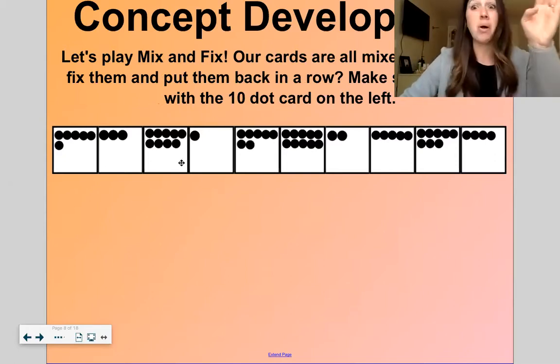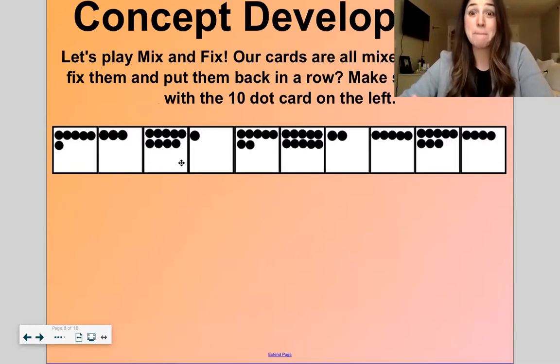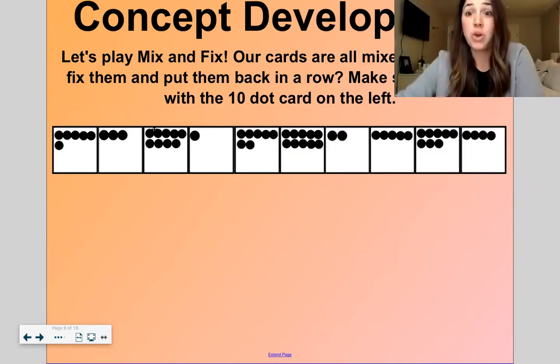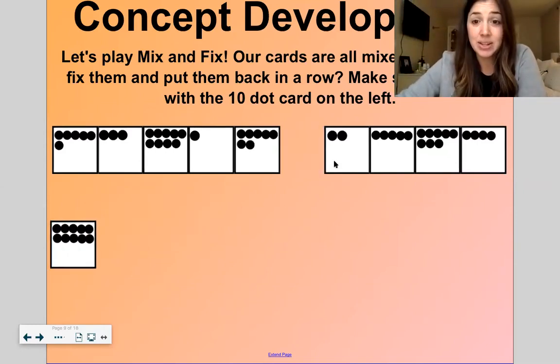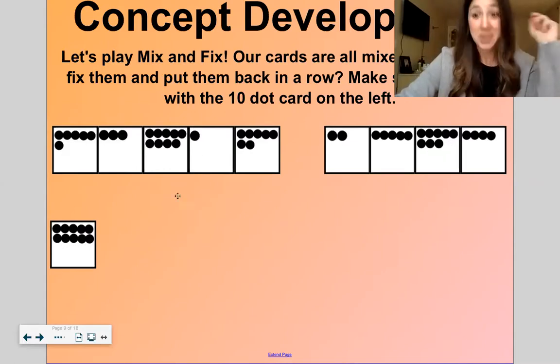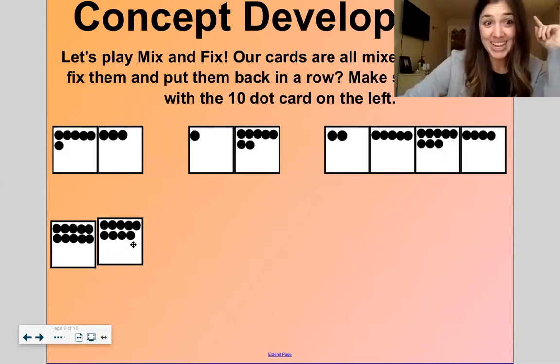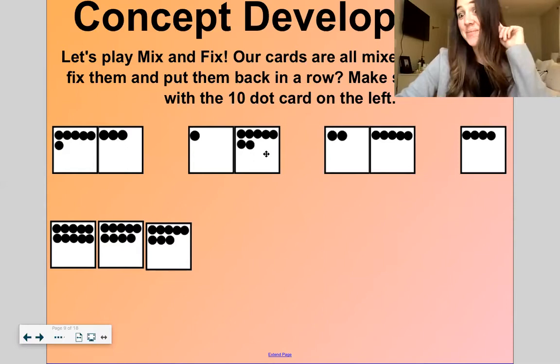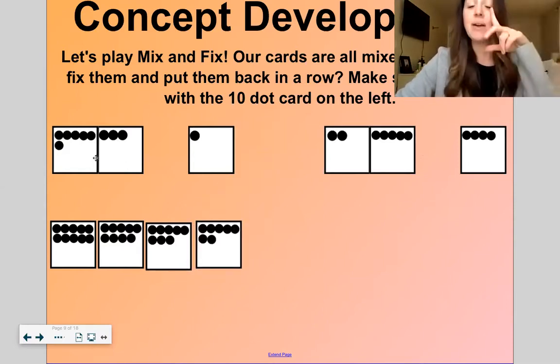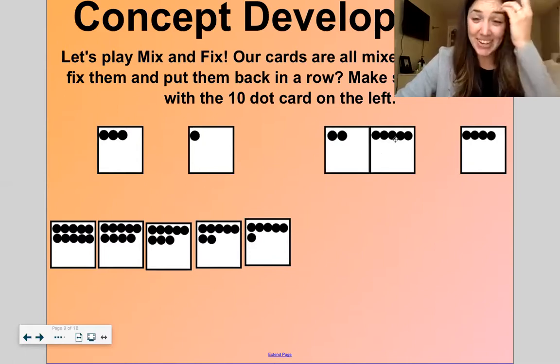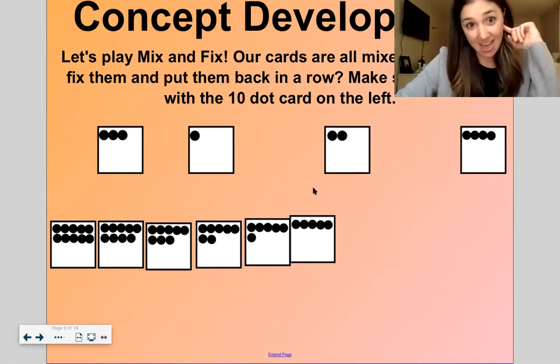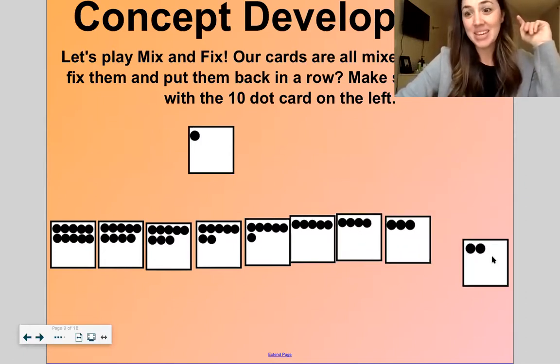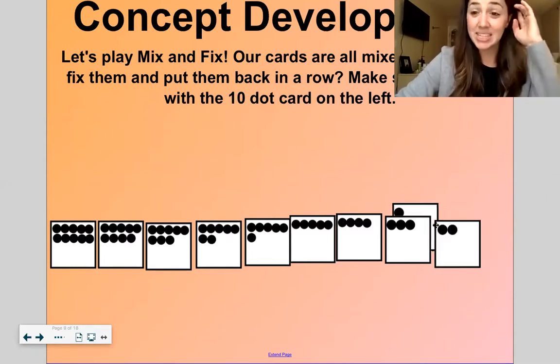Okay, let's play mix and fix. Our cards are all mixed up. Let's fix them and put them back in a row. But instead of counting up, we're going to count down. So let's start with ten. What number do I need next if I'm counting down? Nine. Now I need eight. Now I need seven. Now I need six. Good. Count with me. Now I need five. Four. Three. I hope you're counting with me. Two. Whoa. Two and one.